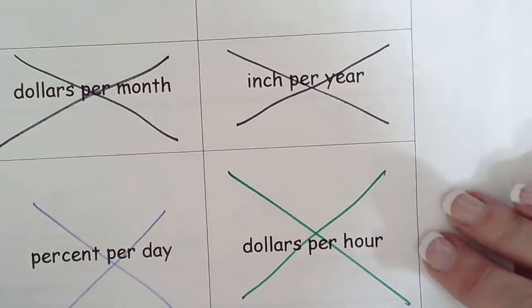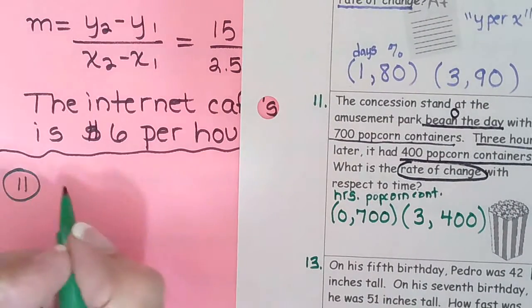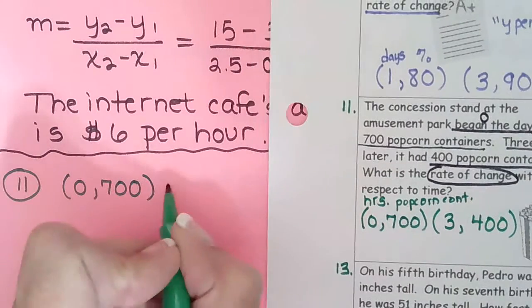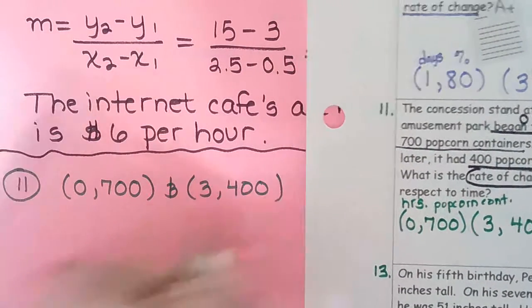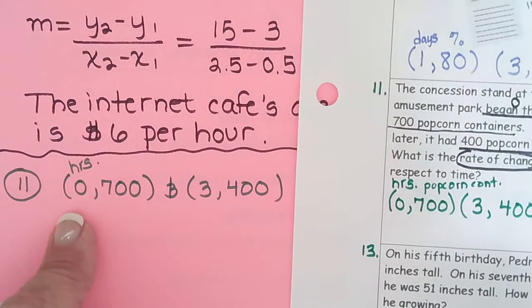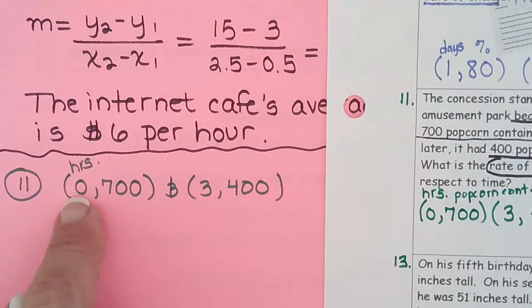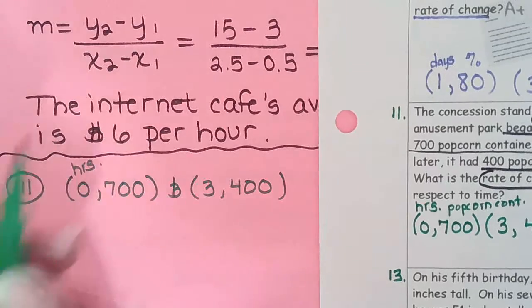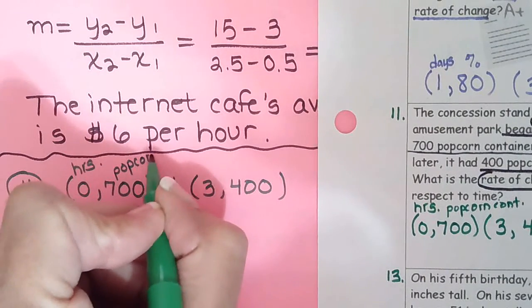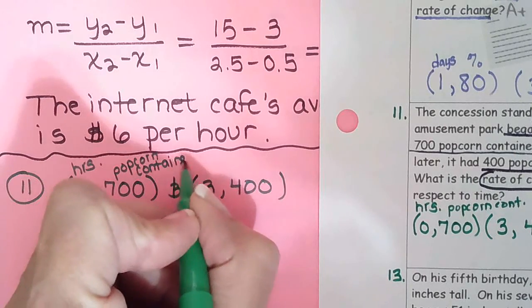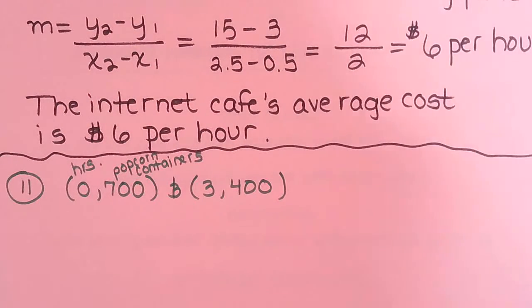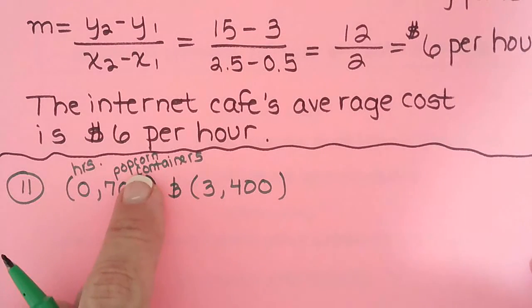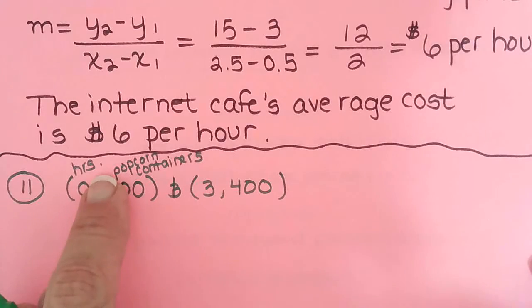For number eleven we put (0, 700) and (3, 400). Zero hours means at the beginning; three hours later could be 9 and 12, or 8 and 11 — it doesn't matter, just add three to get the second number. Y is popcorn containers. The question asks for rate of change — that means how many popcorn containers are they using per hour. Y per x: I always keep that in the back of my mind so I know what I'm finding.